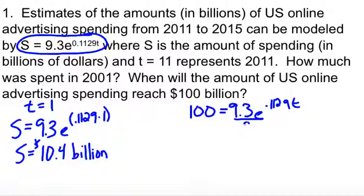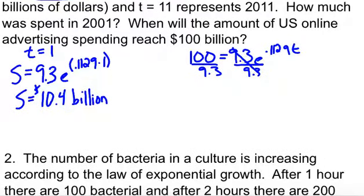Now, the first thing I'm going to do is divide both sides by 9.3. However, I am not going to go to my calculator until the very end because I want an exact answer. And if I put this into my calculator, I'm going to introduce a rounding error. So we're just going to leave this as 100 over 9.3 equals e to the 0.1129t.